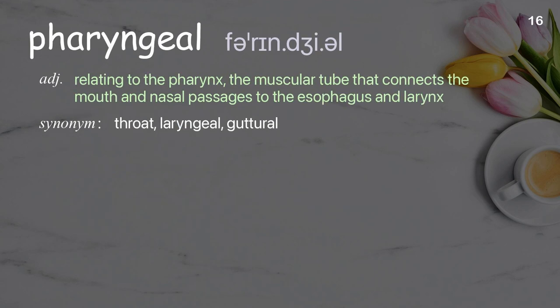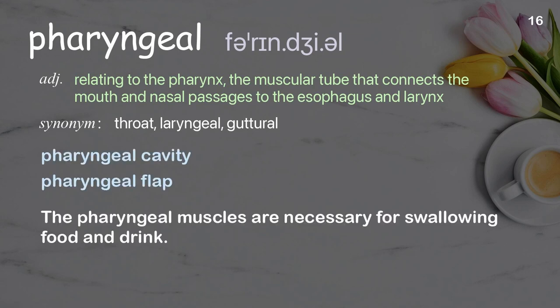Pharyngeal. Relating to the pharynx — the muscular tube that connects the mouth and nasal passages to the esophagus and larynx. Examples: pharyngeal cavity. Sentence: The pharyngeal muscles are necessary for swallowing food and drink.